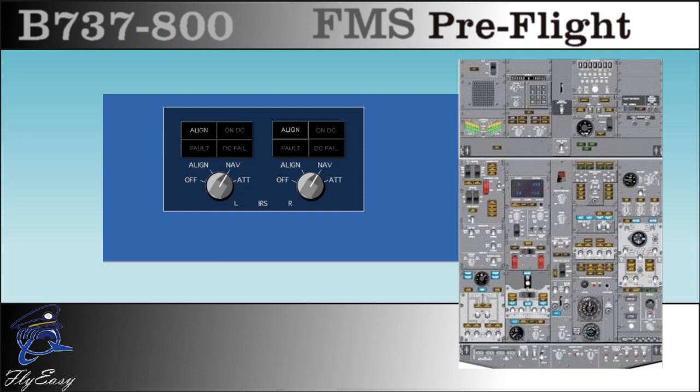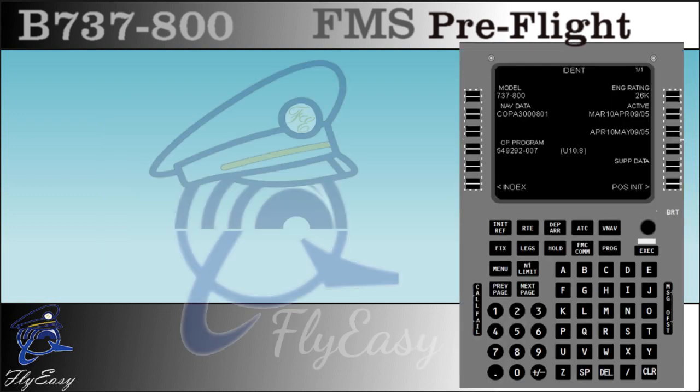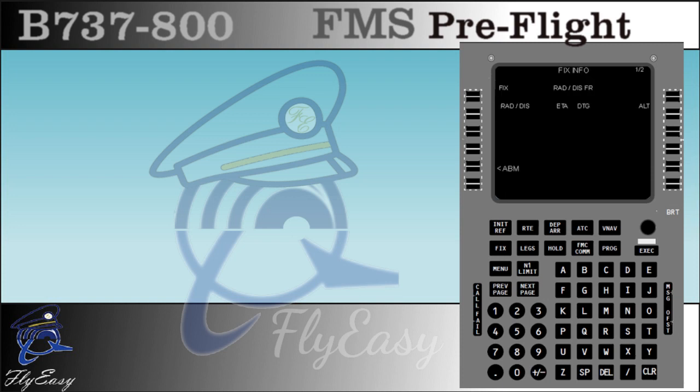First, ensure you have the correct database selected as active. Upon power up the CDU presents the IDENT page. If the IDENT page is not displayed when you enter the cockpit, press the INIT REF key, then press the prompt for INDEX, then press the prompt for IDENT. It selects the PERF INIT page on the ground and allows you to select the index on line select key 6 left. The INDEX page allows us to jump to various pages.